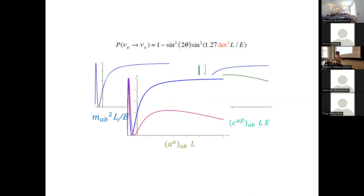Why should we care about improving these bounds further? My claim is that we are just scratching the surface of where we expect these effects to be interesting. From day one, we never expected Lorentz invariance violations to be order one — we know the universe we live in, and we expect these effects to be suppressed by one over some high scale squared. So we don't expect them above 10⁻²⁰ or so. We are just now entering the region where they may show up — not before.